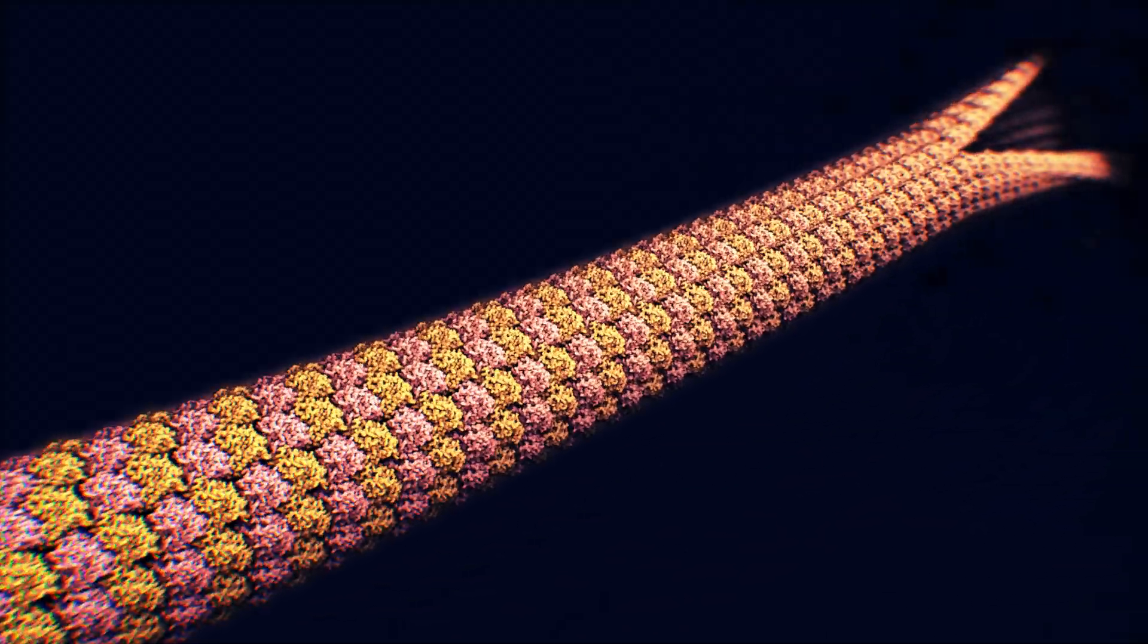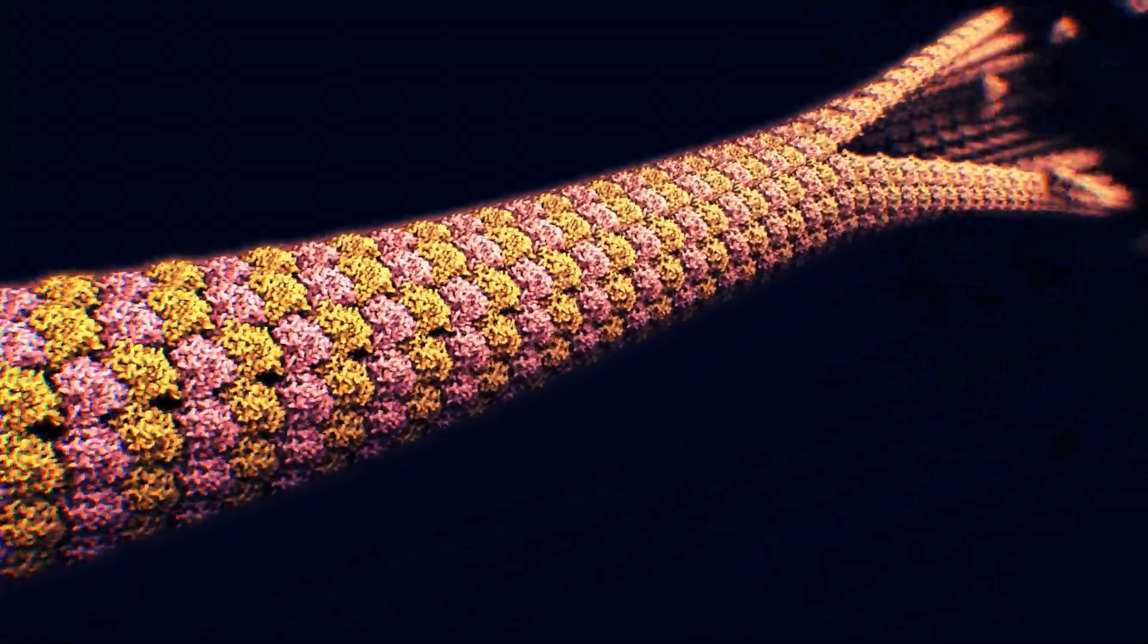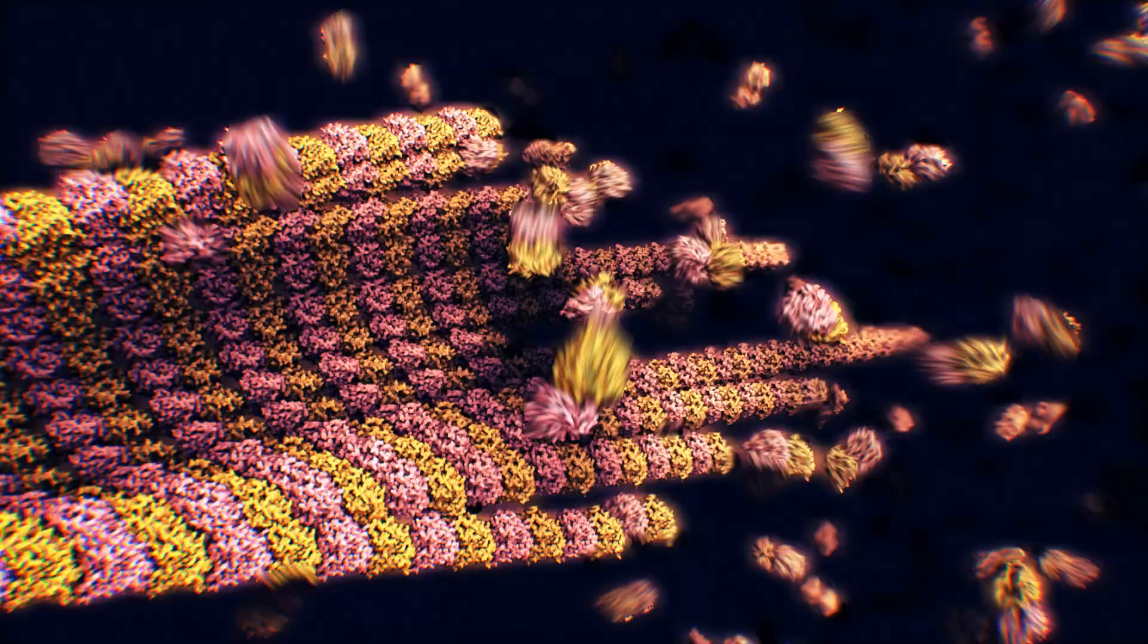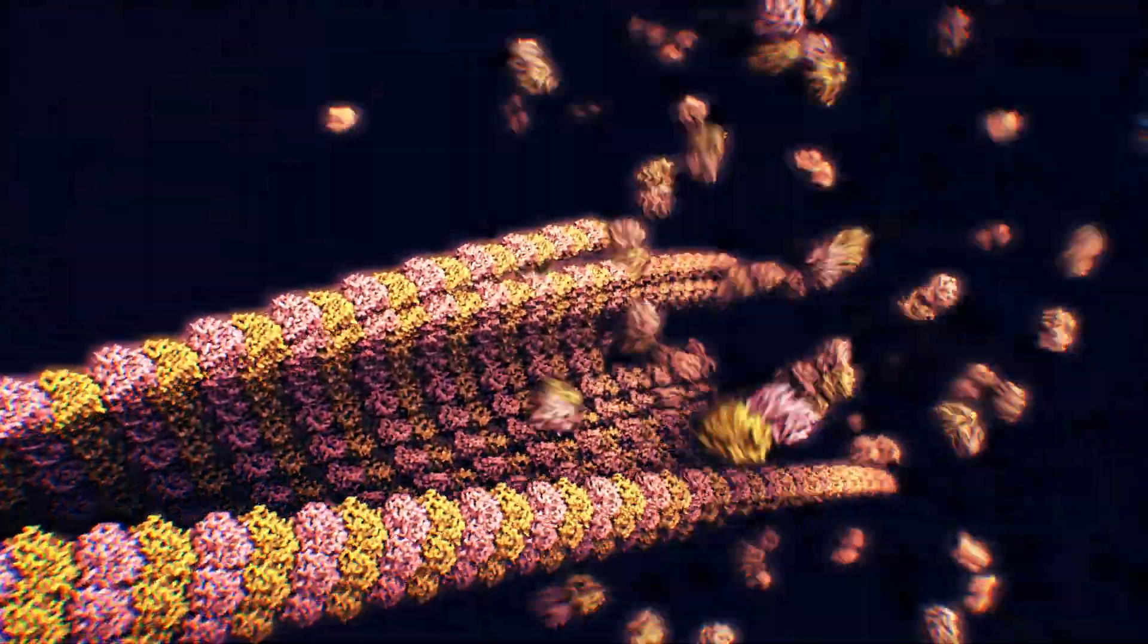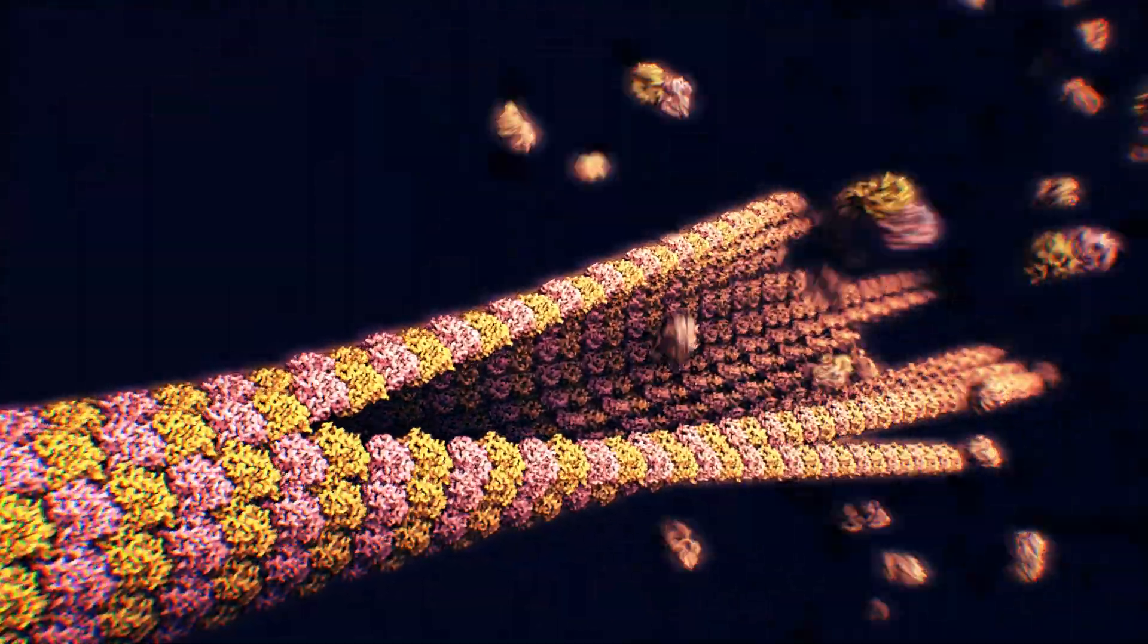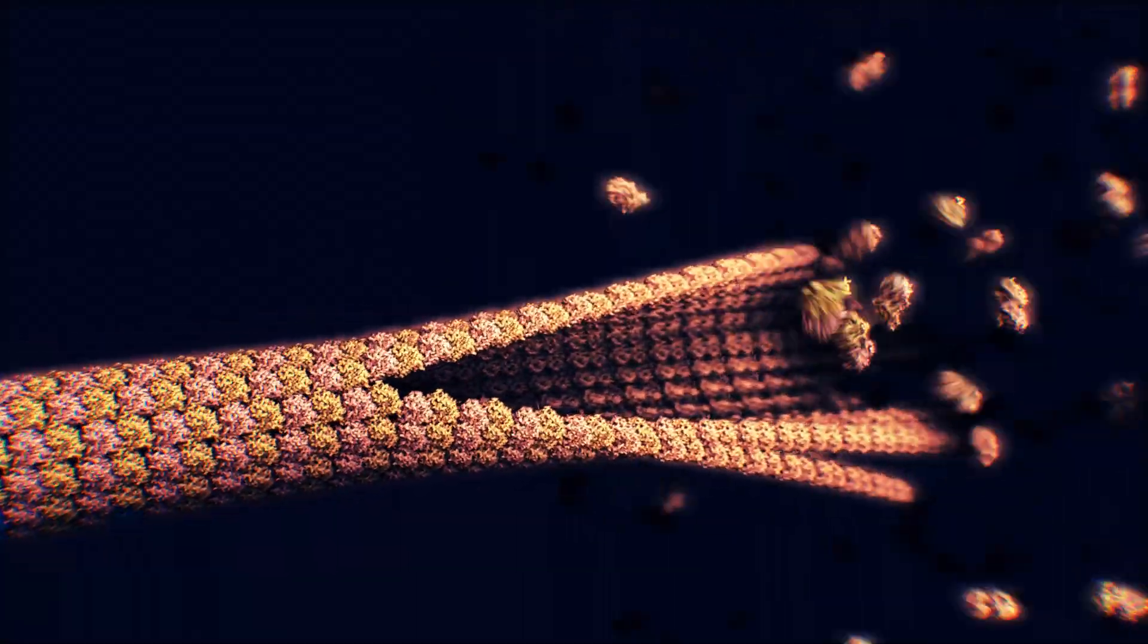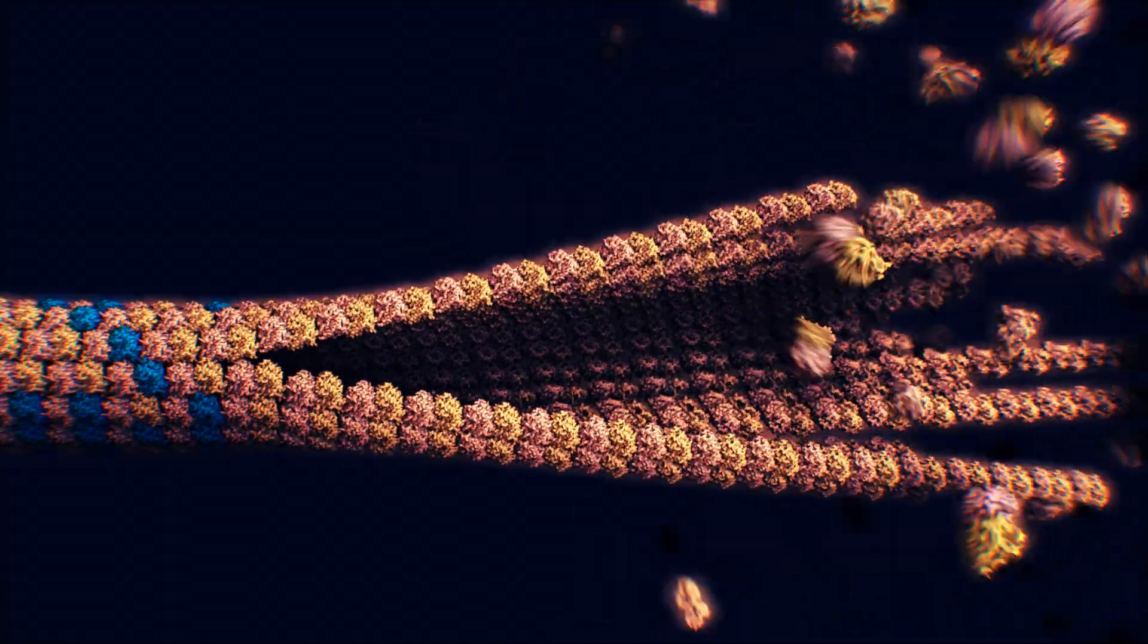When assembling into a microtubule, both alpha- and beta-tubulin are bound to a molecule of guanosine triphosphate, or GTP. After some time, the GTP bound to the beta-tubulin breaks down into guanosine diphosphate, or GDP, in a process called hydrolysis.